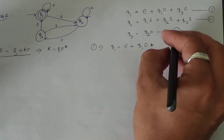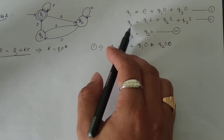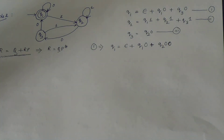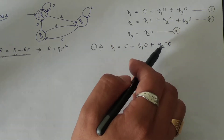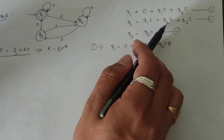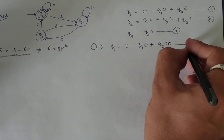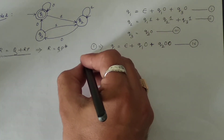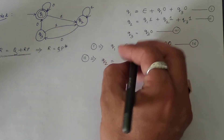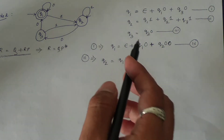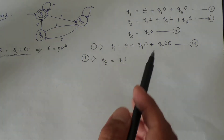Now, if I try to replace q2 using its equation, q2 will keep reappearing — there is no way to eliminate q2 through direct substitution. So I will set equation four aside and first concentrate on equation number two to get a unique solution for q2. In such scenarios where replacing q2 with its equation keeps bringing q2 back, you need to find a unique solution using Arden's theorem.